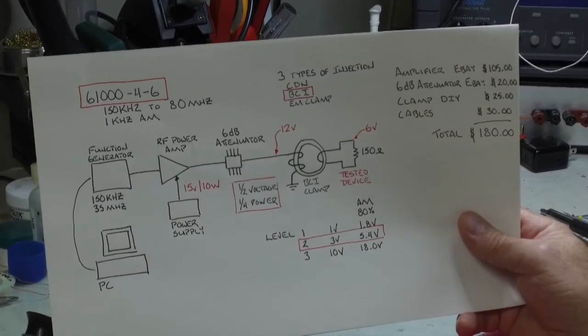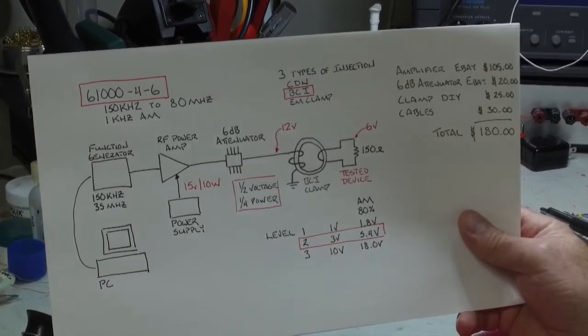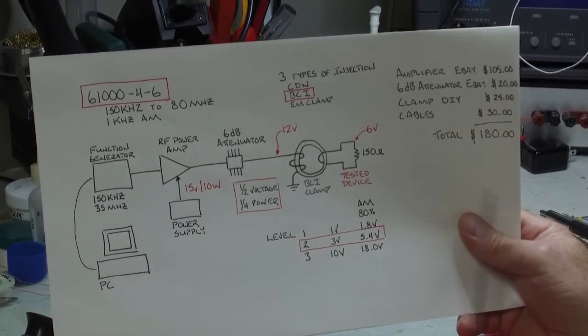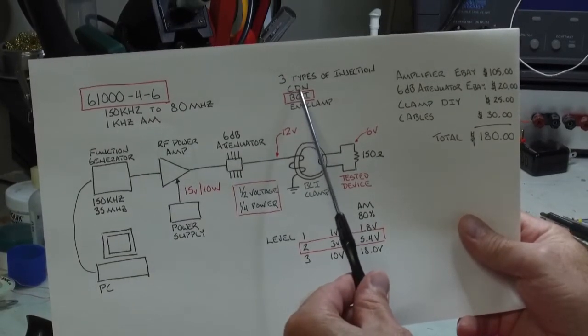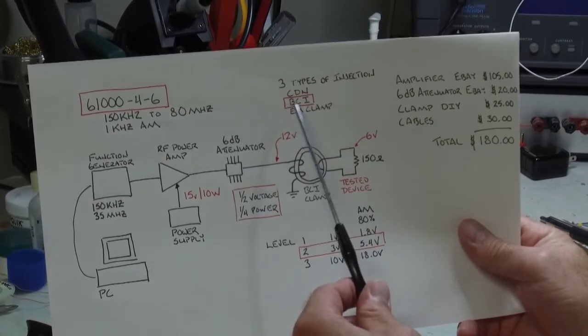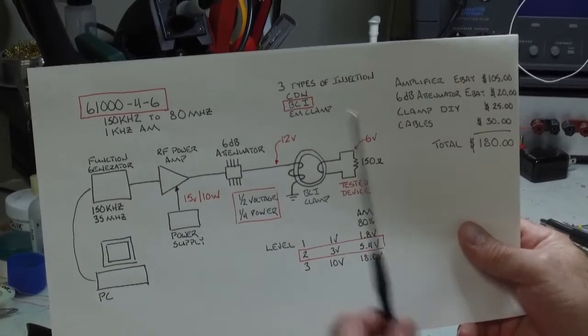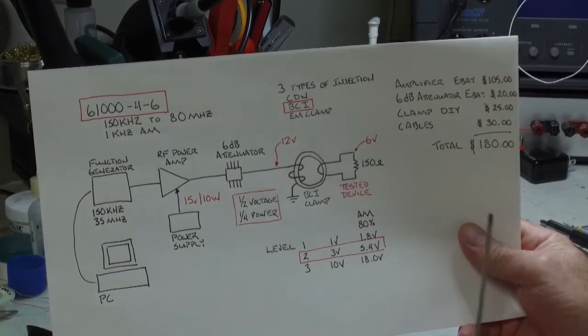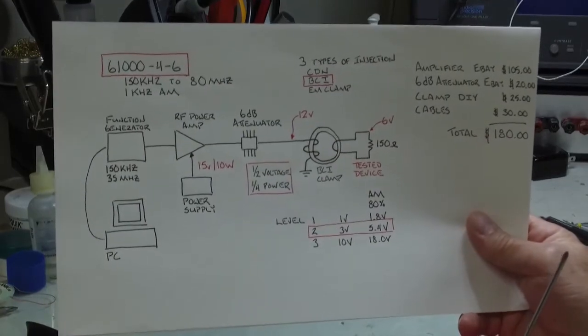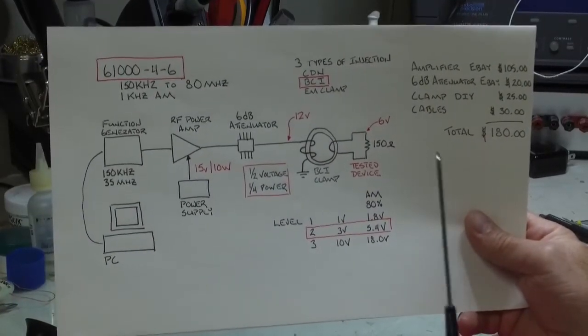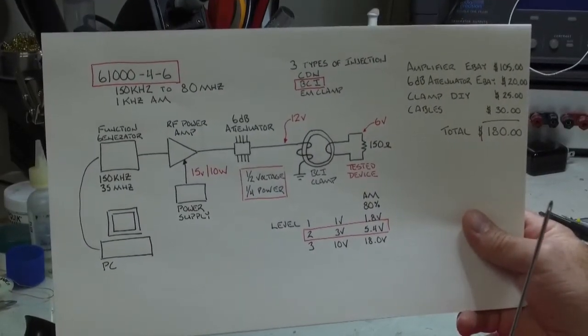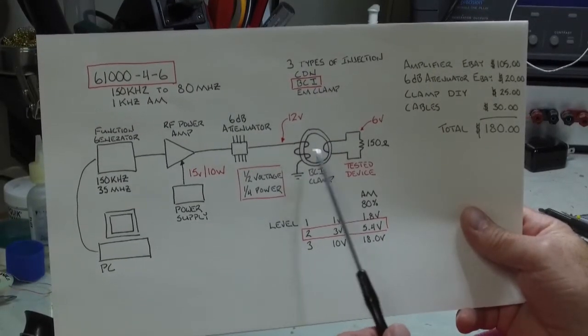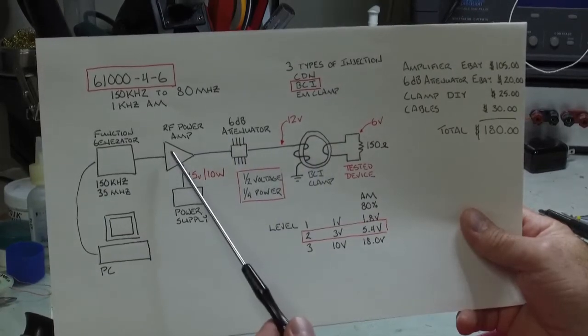I should note that there's three different types of ways of injecting this signal onto your system. There's a CDN, a coupling decoupling network, the bulk coupling system, and an EM clamp. I'm illustrating the bulk coupling because that to me is the easiest to use. It might not have the most repeatable results like a CDN, but it's easier and lower cost.